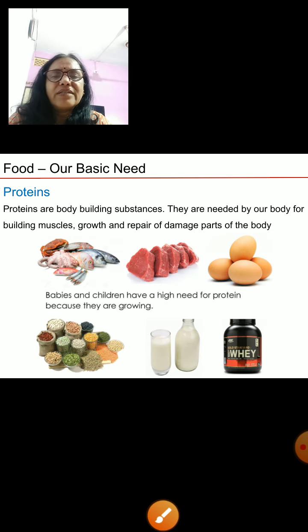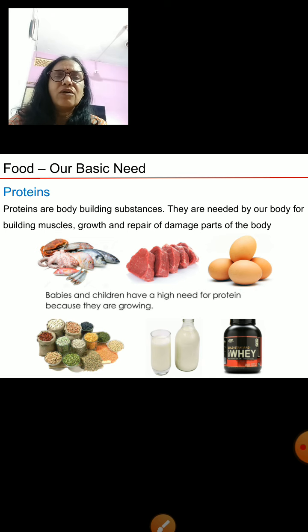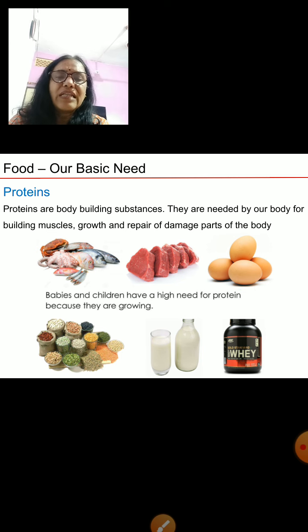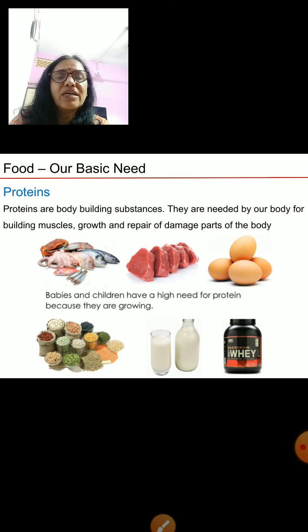The next important nutrient for your body is proteins. They are called body-building substances because they help you to grow. They are needed by our body for building muscles and growth, and they also repair the damaged parts of the body. Proteins are important nutrients, and small children especially need high protein. Sources include fish, meat, eggs, pulses, and milk.